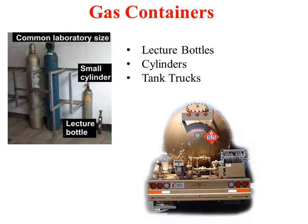Gas is stored in gas containers, and as mentioned earlier they are available in different shapes and sizes. They are available in lecture bottles — very small bottles — or in cylinders, ranging from small to large. A large cylinder can be up to about three meters in height. Gas can also be contained in tank trucks, whether stationary or moveable.